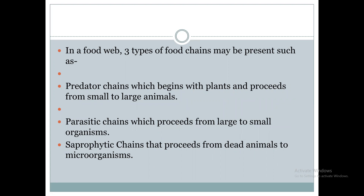There are three types in the food web: first, predator chains, which begin with the plants and proceed from small to large animals; second, parasitic chains, which proceed from large to small organisms; and third, saprophytic chains or detritus chains, which proceed from dead animals or dead organic matter to microorganisms. In each type, a food web is formed. These are the three types of food chains corresponding to the food web.